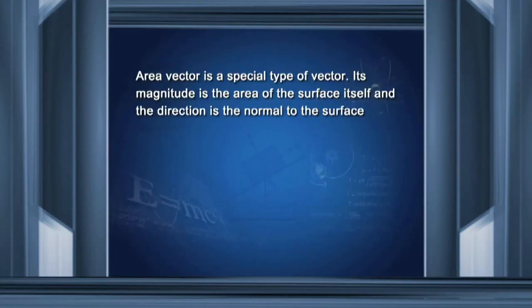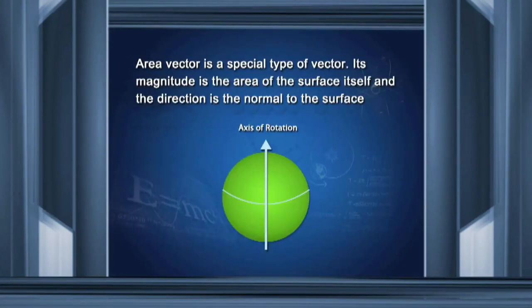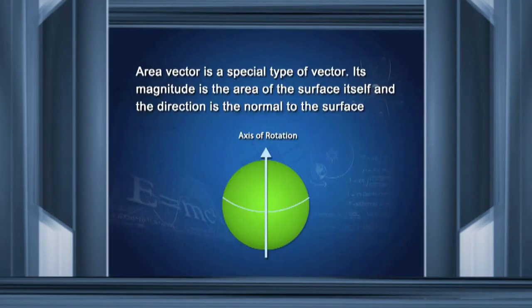Area is also treated as a vector in many contexts. The area vector is a special type of vector whose magnitude is the area of the surface itself and whose direction is the normal to the surface. Angular velocity is another slightly peculiar vector — its magnitude is the rate of rotation and its direction is along the axis about which rotation occurs. It is a special kind of vector, but a vector all the same.